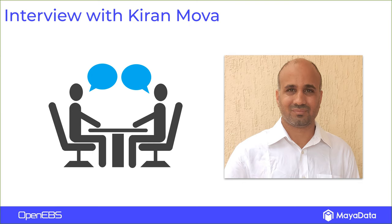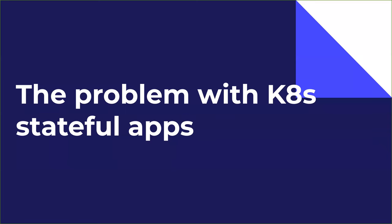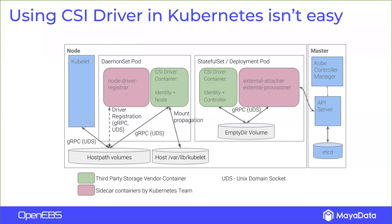Now we're joined by Kiran to talk about Kubernetes and OpenEBS. The state of stateful applications in Kubernetes is always evolving. I've definitely seen a lot of improvements in the last three years that I've worked in Kubernetes and I still see it's evolving. Looking back, the community was mainly focused on making sure we connect to external storage, and those interfaces have evolved into what we call CSI. CSI is definitely promising, but it has a lot to offer in terms of extending interfaces to perform higher-level data management objectives.